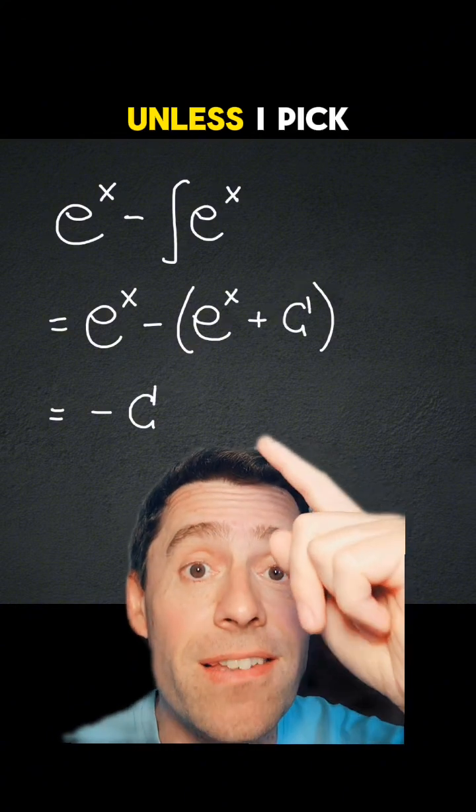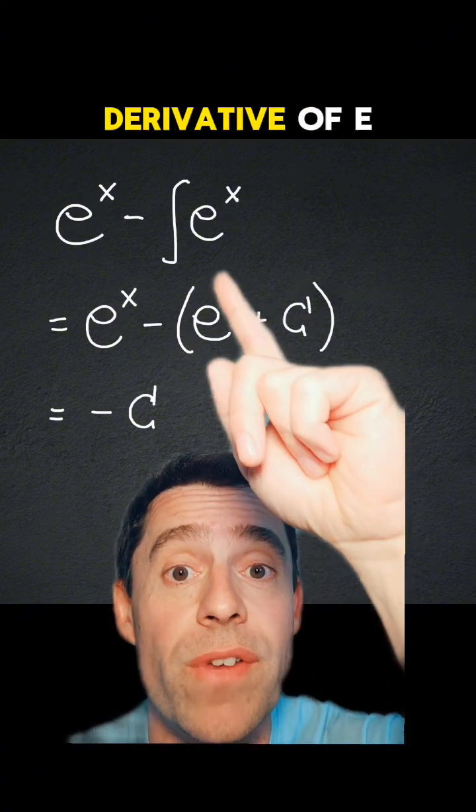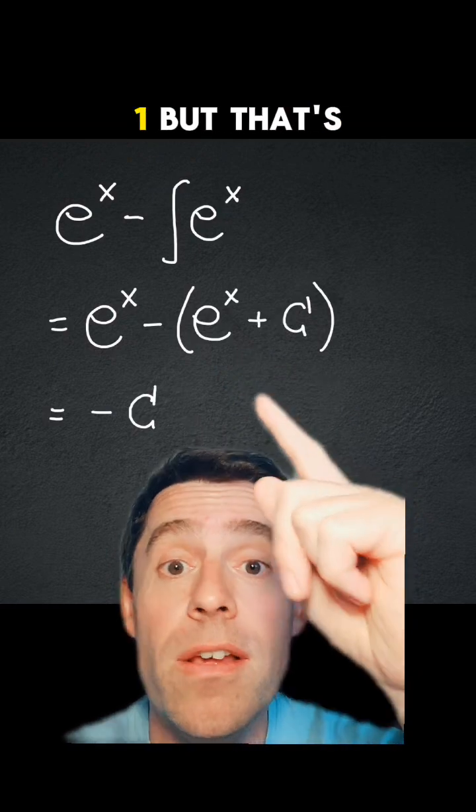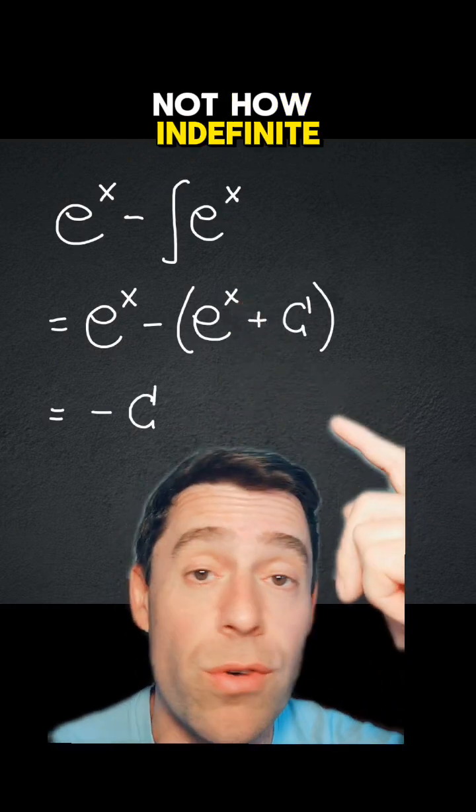So this is not 1, that's a constant, unless I pick a specific antiderivative of e to the x, which would be in this case e to the x minus 1, so that is 1. But that's not how indefinite integrals work.